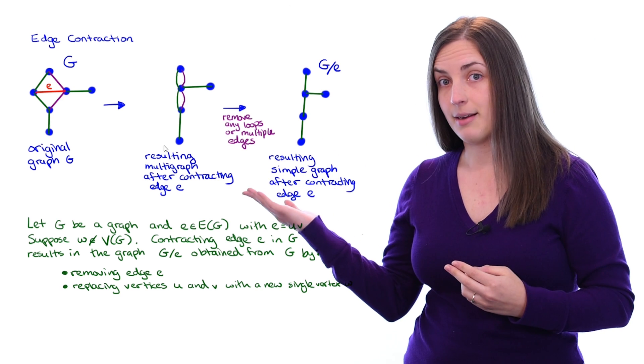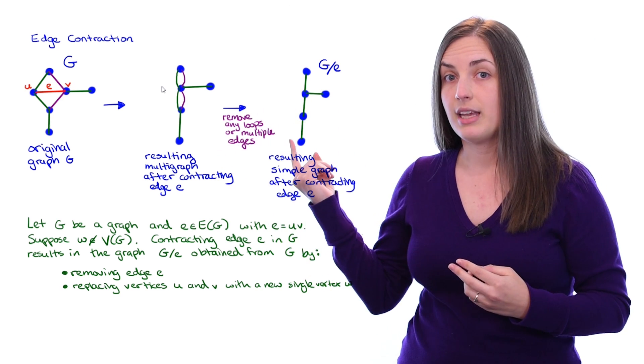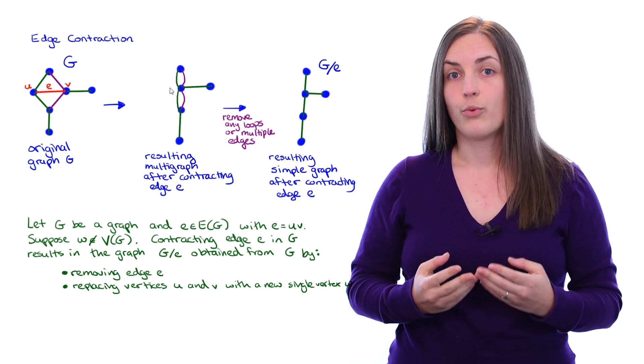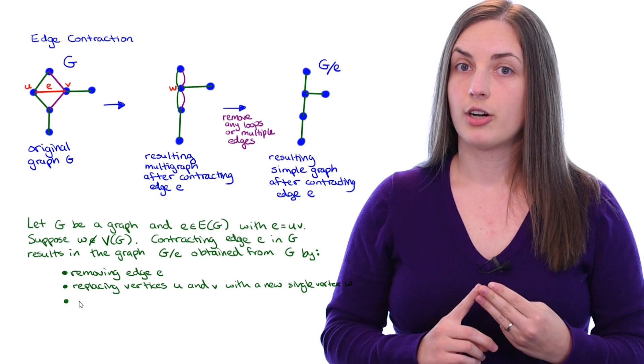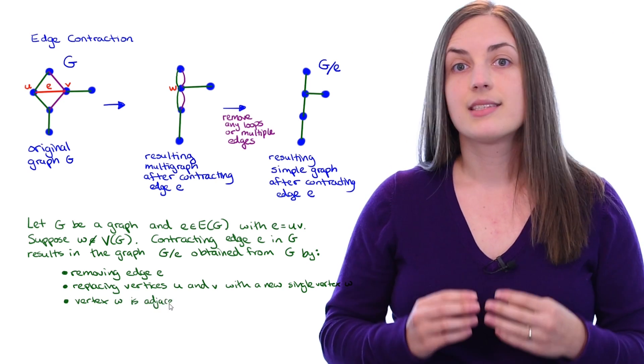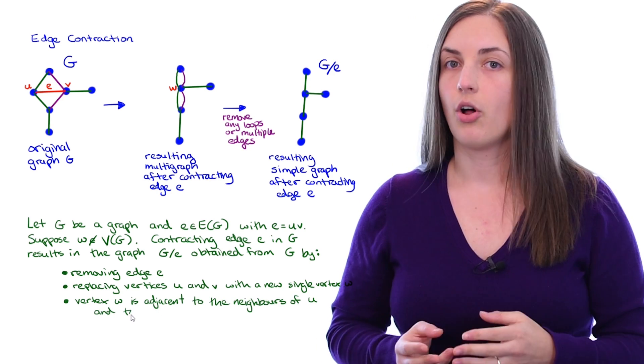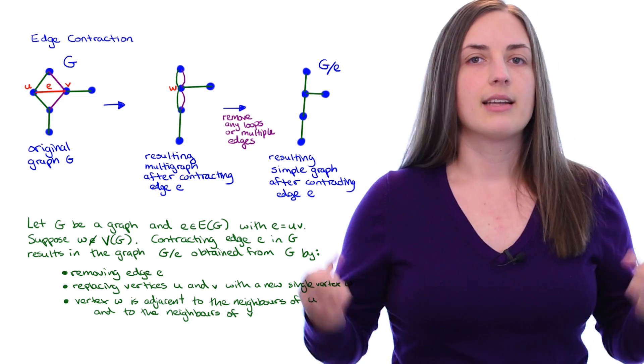If we look back at our example, we see that edge E had end vertices u and v, and in the new graph we've replaced those with the vertex W. The third step is to make sure that vertex W is adjacent to all of the neighbors of u and all of the neighbors of v. That's the intuition behind an edge contraction.